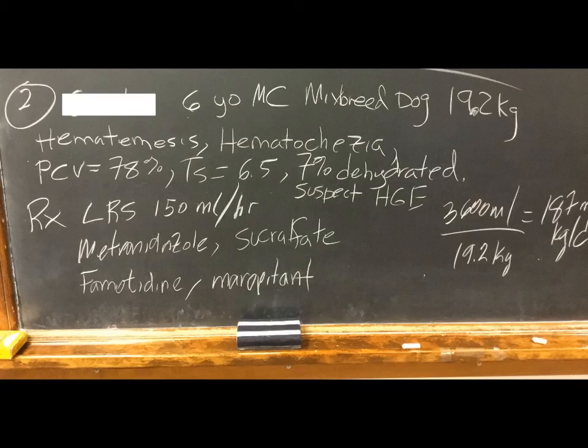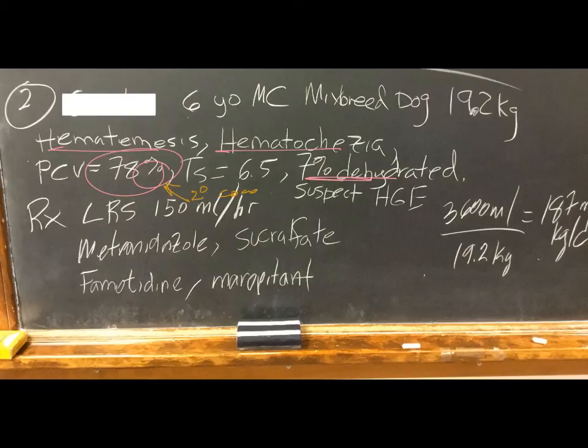What about the next case? Our next case, actually seen on the same day, was a six-year-old male castrated mixed breed dog. Now this one is 19 kilograms. Same, more or less the same history, hematemesis, hematochezia, and a hematocrit of 78%, 7% dehydrated. This dog is at great risk of developing a real problem with regards to its circulation and secondary coagulation problems. So we need to be very aggressive with the therapy.